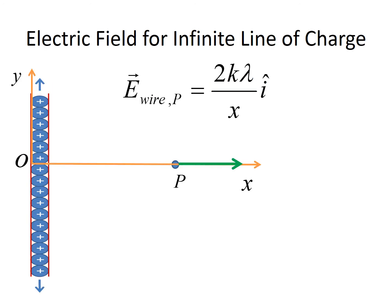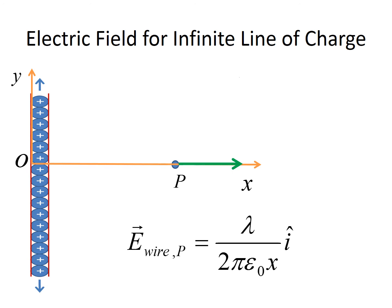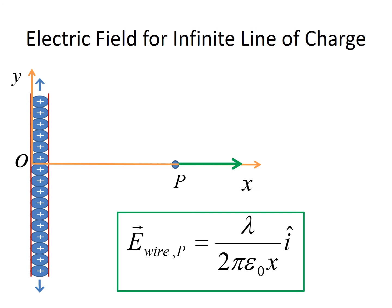Substituting into our equation for the wire gives lambda over 2 pi epsilon sub zero X — the final equation for the electric field due to an infinite line of charge. This equation is also valid for points close to a finite-length wire. This concludes the presentation.